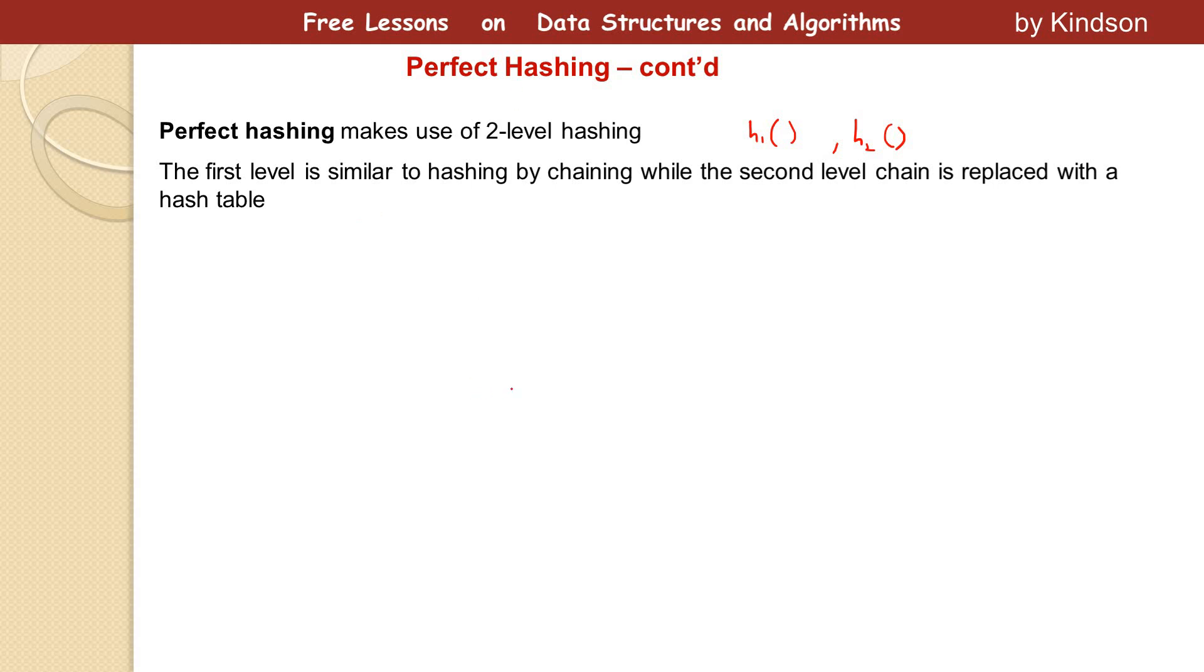When it overflows or two items get into the same place, you move them to a second location. In case of chaining we use a linked list, but in case of perfect hashing or two-level hashing, we use another hash table instead of a linked list.